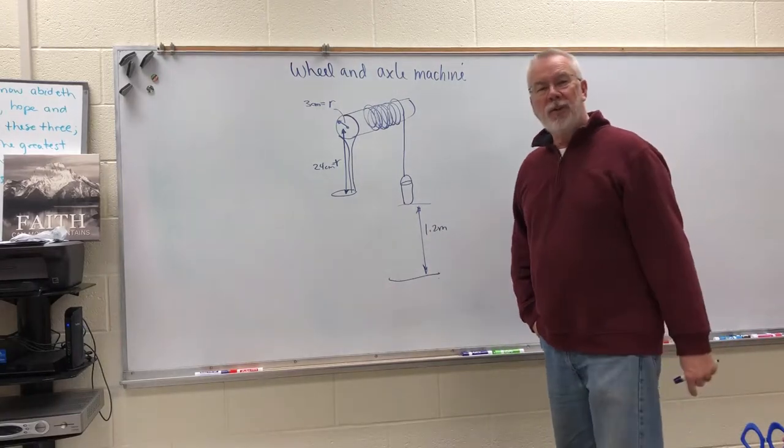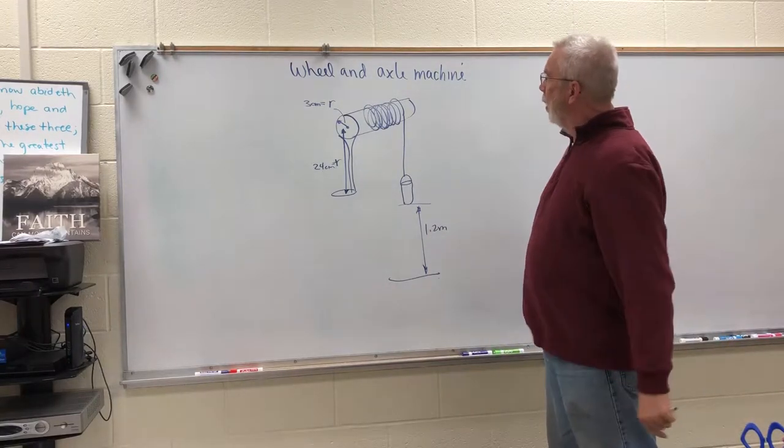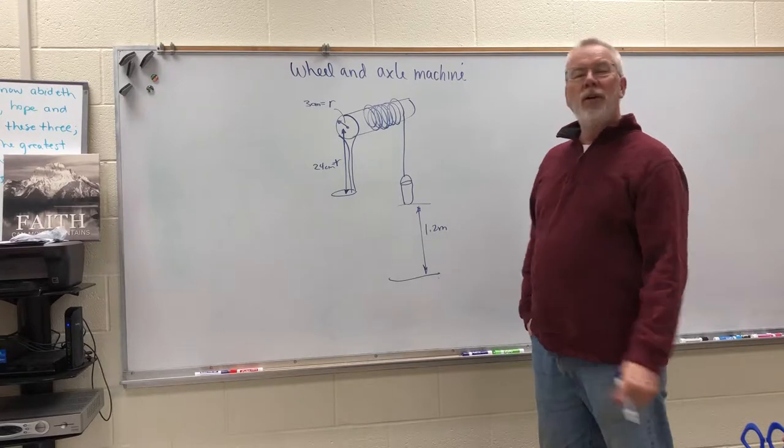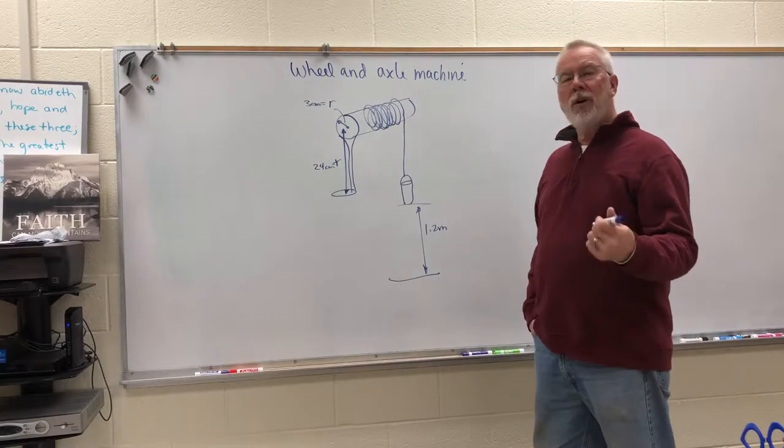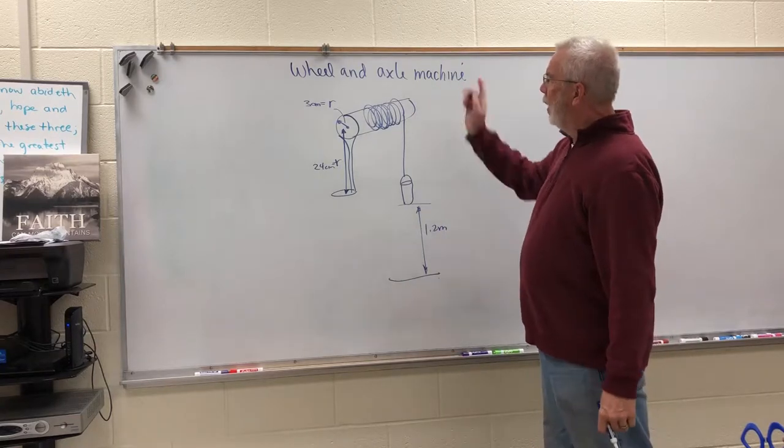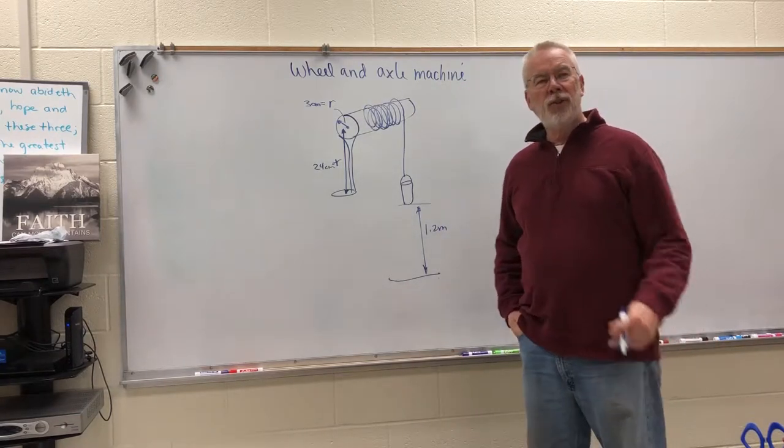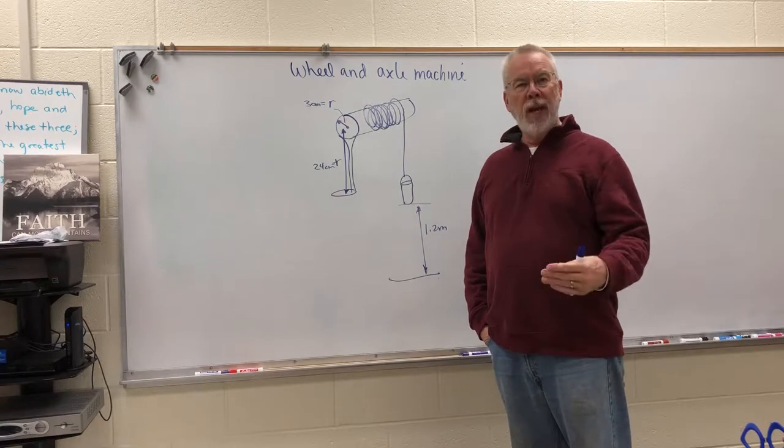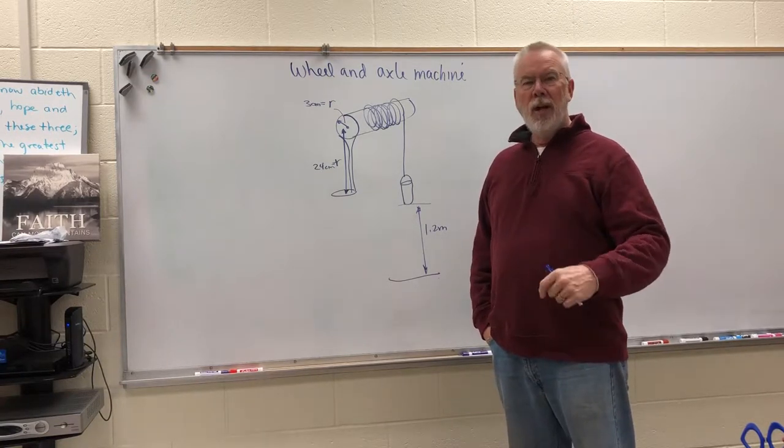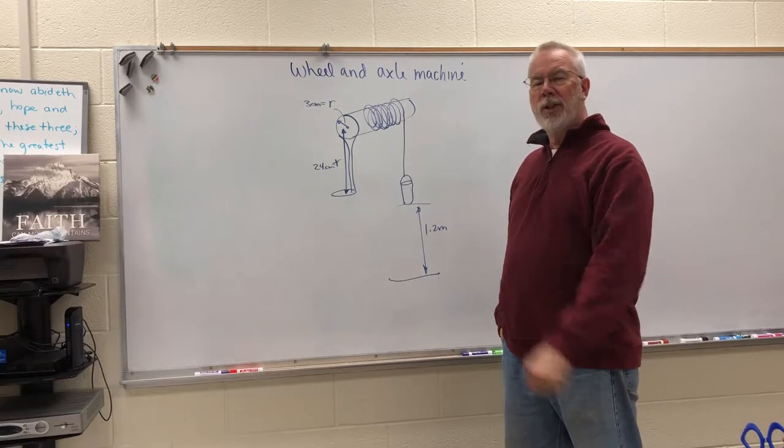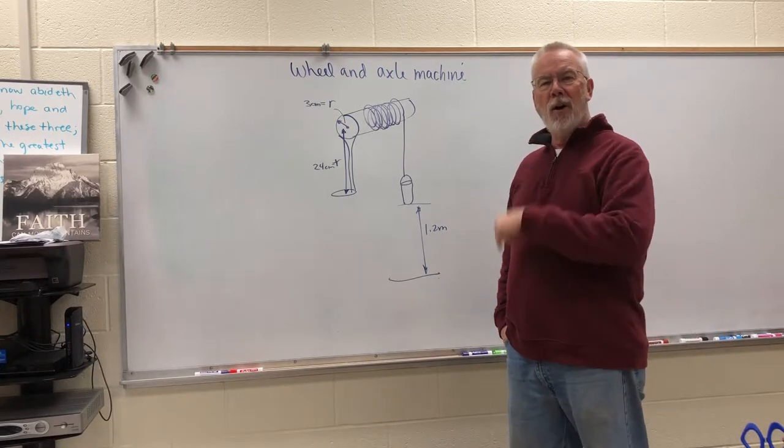Welcome to GWA physics and this problem that we're going to work today is a wheel and axle machine. In the previous unit when we were talking about simple machines, a wheel and axle is one of the six simple machines that we had to solve for mechanical advantage, work in and work out. We're going to go through this slow and easy and see if we can nail down all the things that tend to be pitfalls in these kinds of problems.